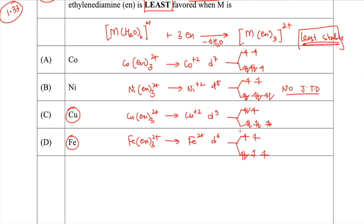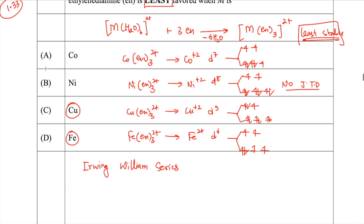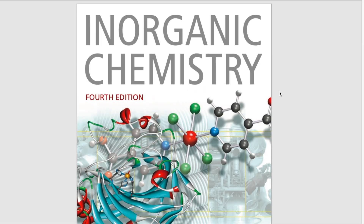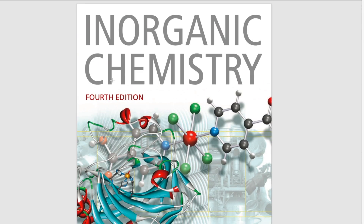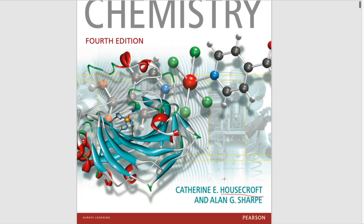However, there are references that point to a different answer. The relevant concept is the Irving-Williams series. Looking at the stability of these ions based on their CFSC values according to the Irving-Williams series, the answer is iron. To demonstrate this, I'll show you a reference from the standard textbook by Housecroft — and I'd like to thank Satyabrath for providing this reference.